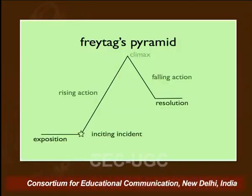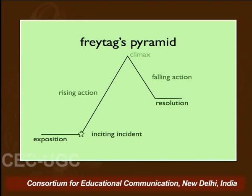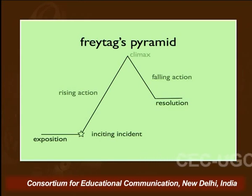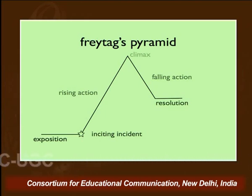For a long time we have been trying to understand different story formats and we have been talking about Freytag's Pyramid for the last few videos. In this video, if you can see it on your screen, this is how Freytag's Pyramid looks like, where you have exposition, then inciting incident, then rising action, at the apex is the climax, then falling action and then resolution. This is not a perfect triangle, but it is a sort of a pyramid.